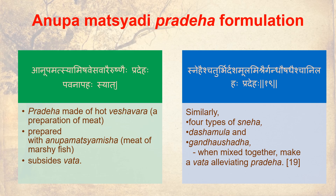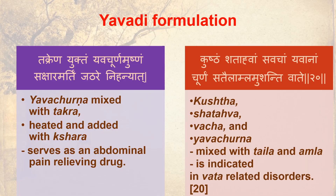Anupa Matsyadi Pradeha Formulation: A Pradeha made of hot Veshavarai preparation of meat prepared with Anupa Matsya Amisha — meat of marshy fish — alleviates Satsaid Vada. Similarly, four types of Snehi, Dashamula and Gandha Ushadah, when mixed together, make a Vada-alleviating Pradeha.